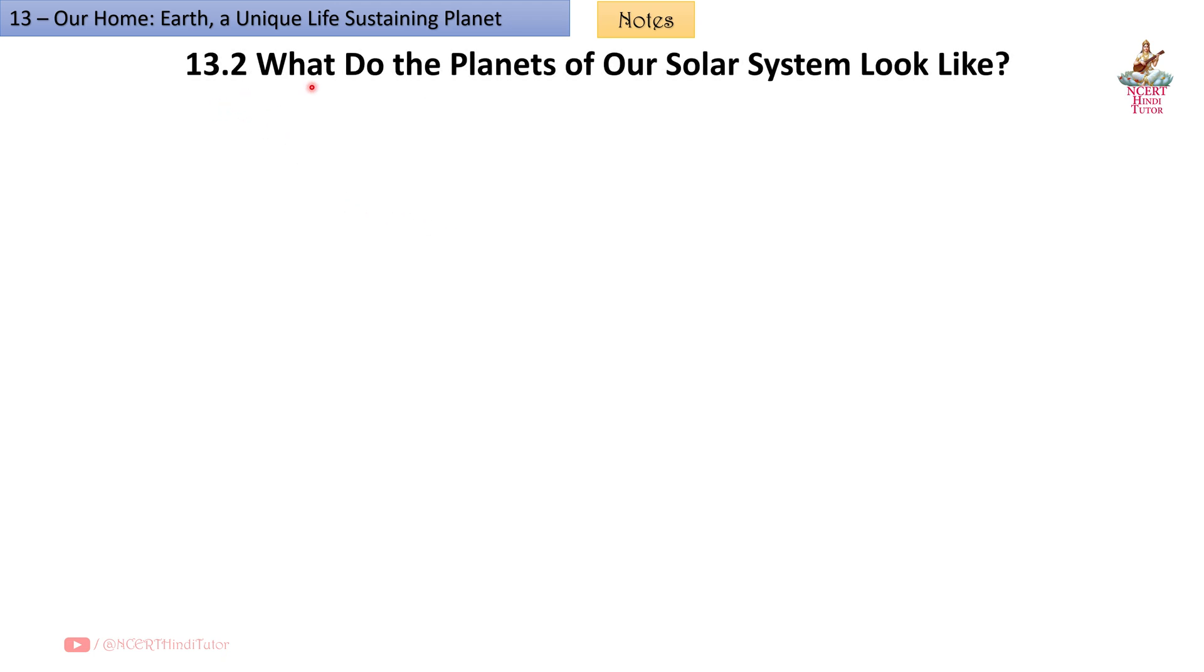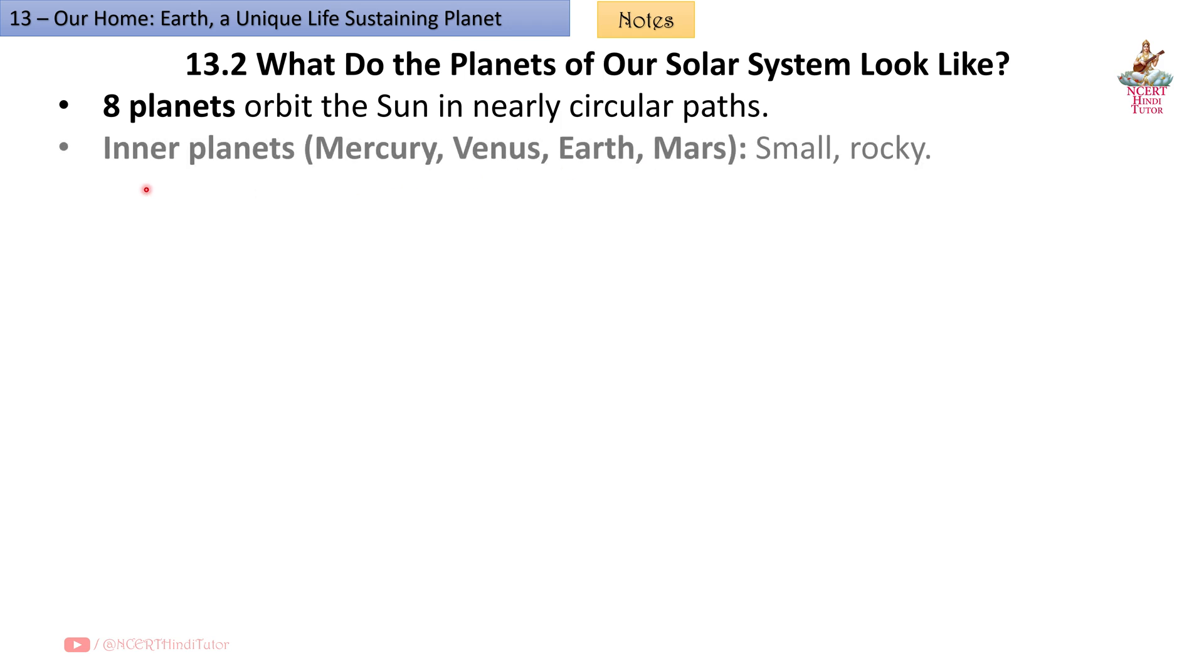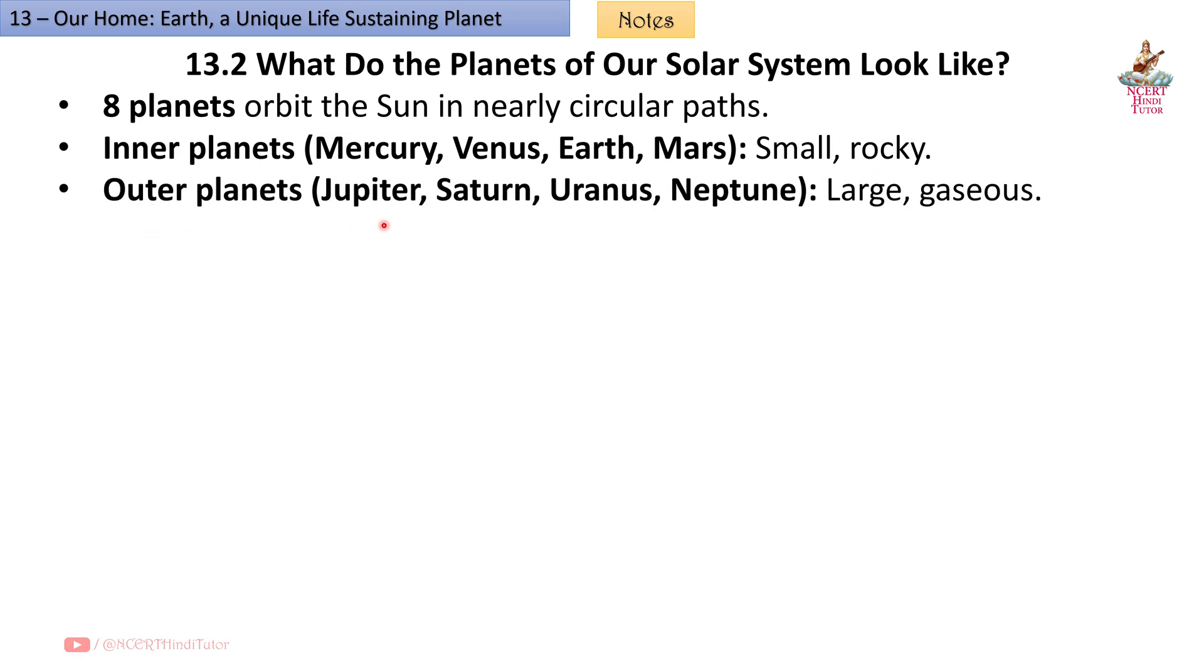13.2 What do the planets of our solar system look like? Eight planets orbit the sun in nearly circular paths. Inner planets: Mercury, Venus, Earth, Mars - small, rocky. Outer planets: Jupiter, Saturn, Uranus, Neptune - large, gaseous.